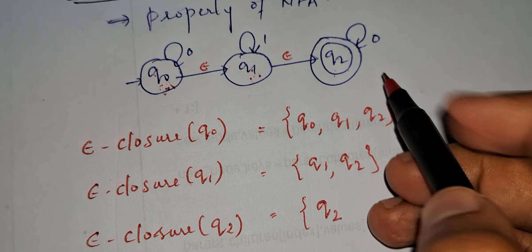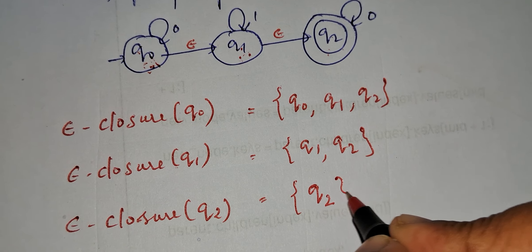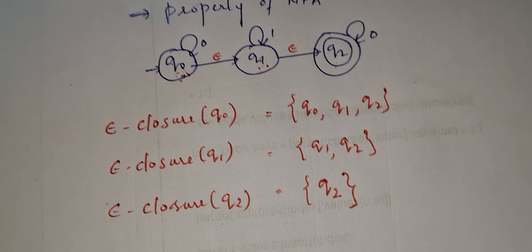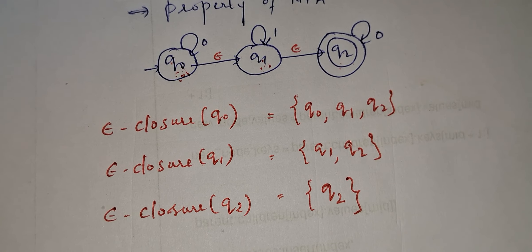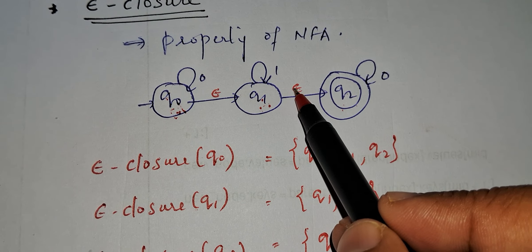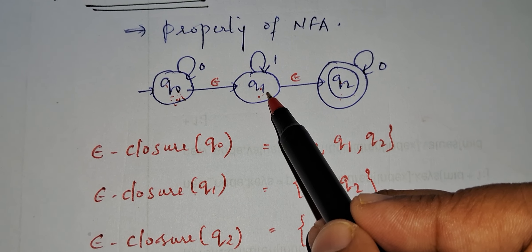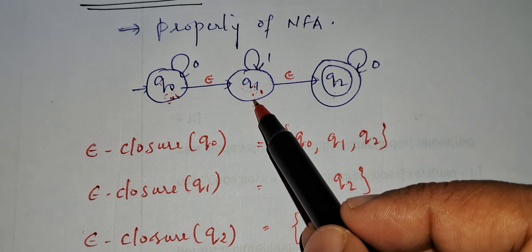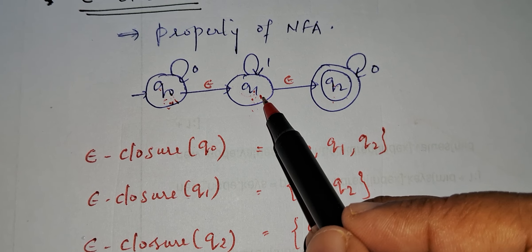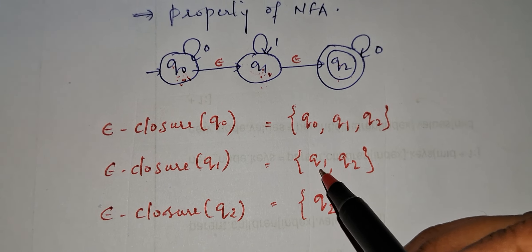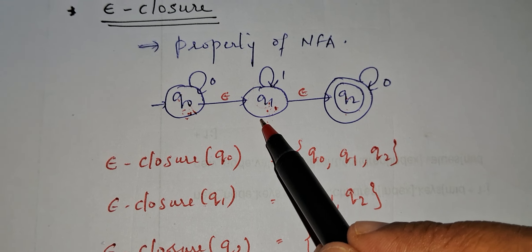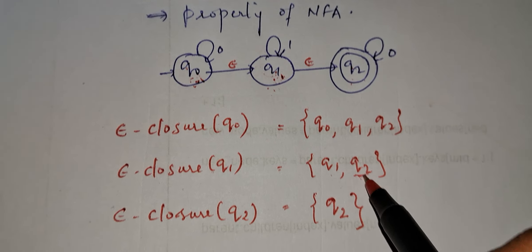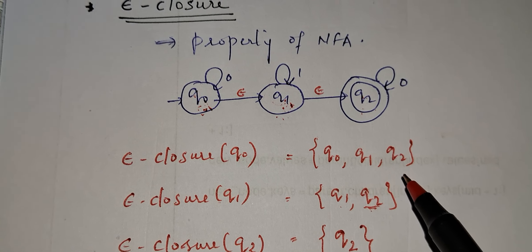For e-closure of q1: q1 itself is included, and from q1 there is an epsilon transition to q2, so e-closure of q1 is {q1, q2}. For e-closure of q2: q2 itself is included, and there is no epsilon movement from q2, so e-closure of q2 is {q2}. If there were no epsilon movement from q1 to q2, then e-closure of q1 would be just {q1} itself.